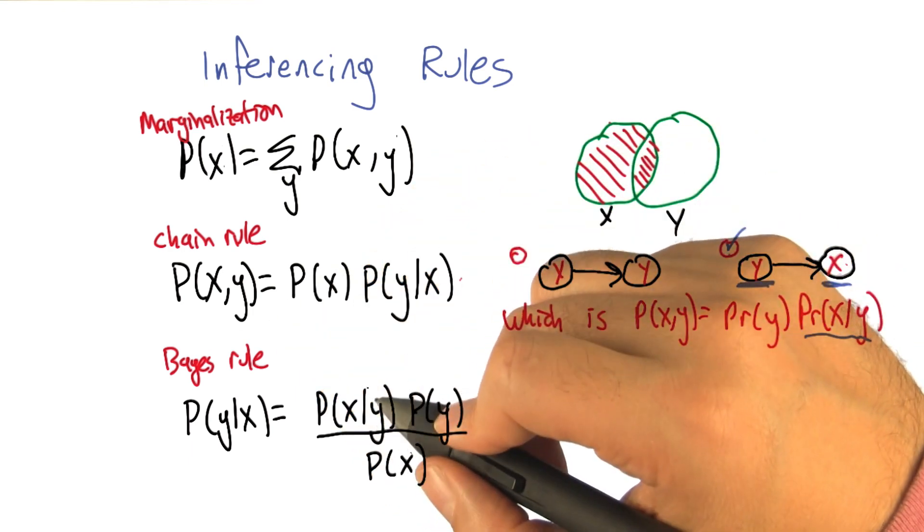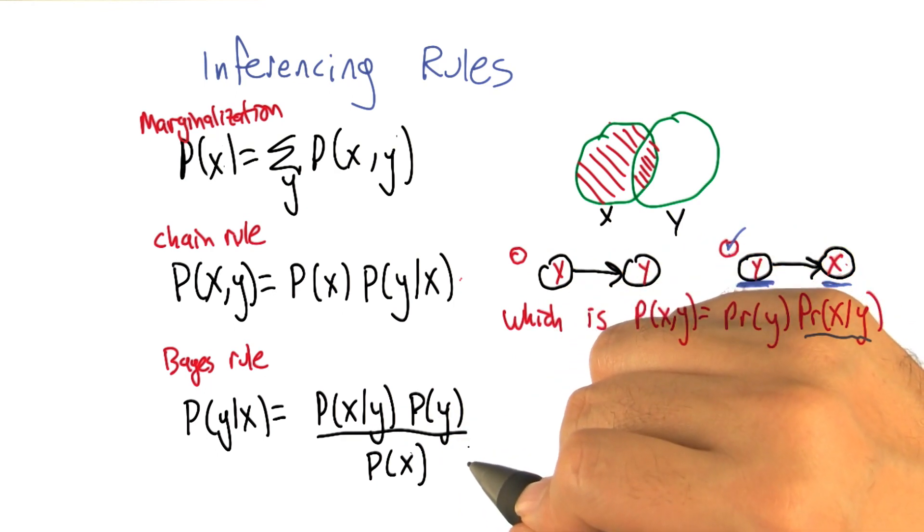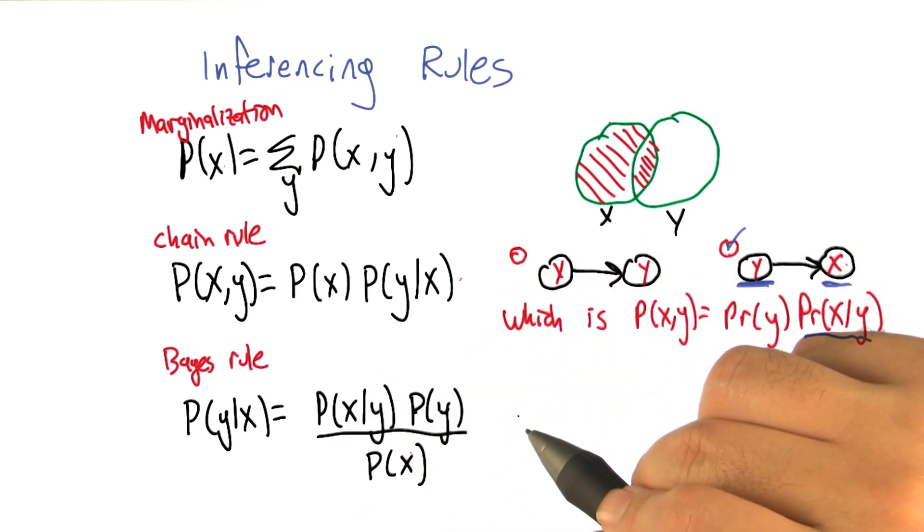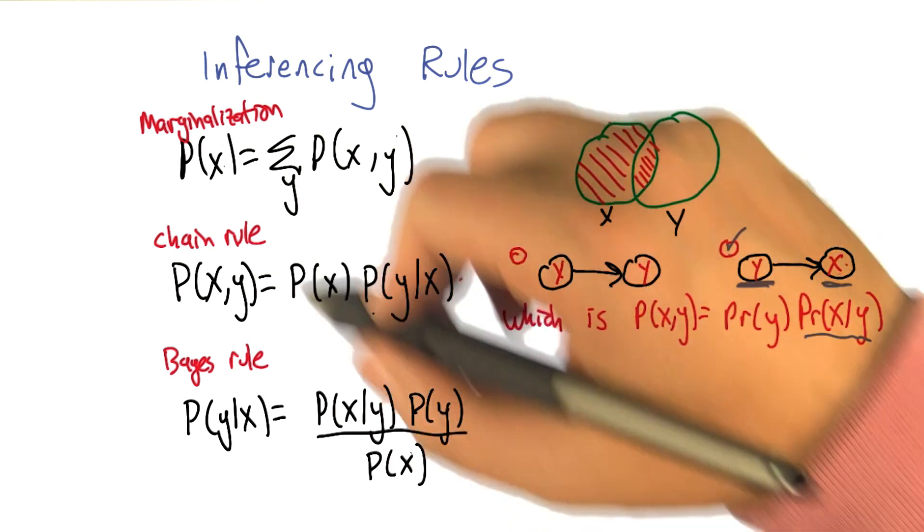And the last of these three equations is just Bayes' rule, this time written correctly, where the denominator has to be the probability of x. And we've gone over this a couple times, I don't need to describe it again.